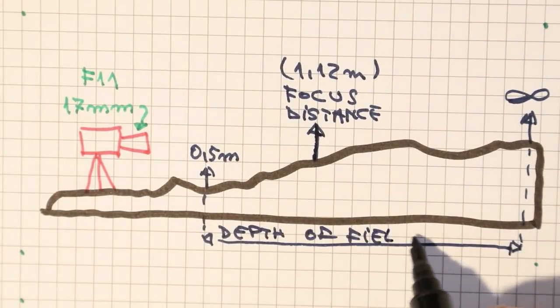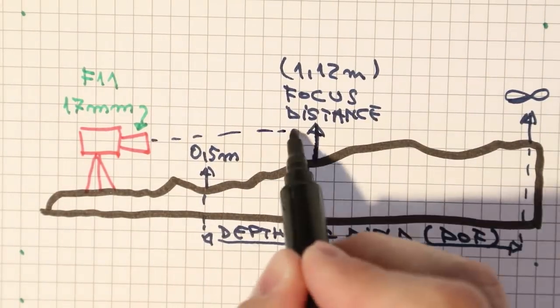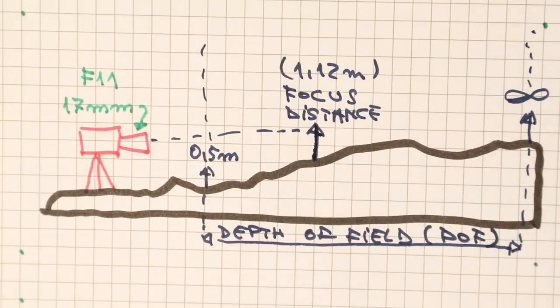But what about the elements that are closer than 0.5 meters to you? There are some cases that just can't be solved like this. The objects and elements of the photo are so close to you that you need to do something else in order to have a photo that has all elements in focus.